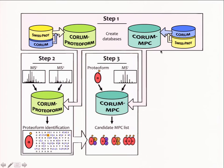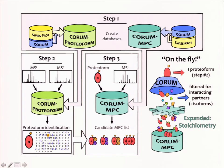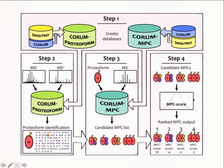In step 3, we use the quorum MPC database, which is generated on the fly using the proteiform identified in step 2. That proteiform is used to filter the CORUM database for interacting partners and isoforms, then we expand to include all possible stoichiometries — making up our quorum MPC database. It's important to note that although our quorum proteiform database is relatively static in size, the quorum MPC database can greatly vary depending on the proteiform identified in step 2. Step 3 then uses the proteiform information from step 2 in conjunction with the MS1 values — the intact mass of your full intact complex — to search the quorum MPC database and generate a list of candidate MPCs.